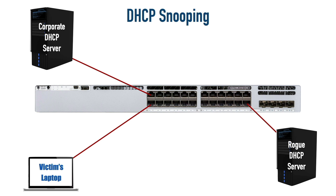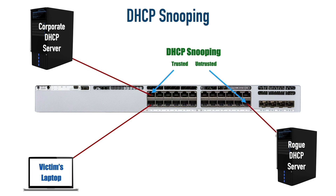To address the rogue DHCP server threat, I'm going to show you how to turn on a feature called DHCP snooping on a Cisco Catalyst switch. The switch can eavesdrop on the exchange of DHCP information, and we can designate which ports are trusted and untrusted. A trusted port allows a DHCP offer message to come in. So only the port connected to our legitimate DHCP server will be trusted; everything else is untrusted. When the rogue server sends back an offer, it will be dropped because it arrives on an untrusted port.